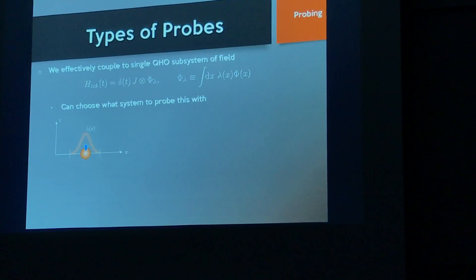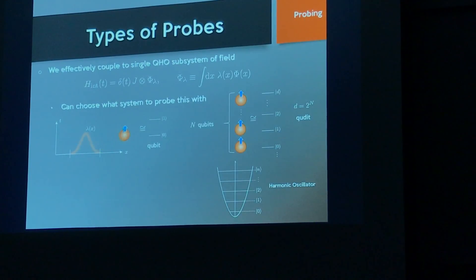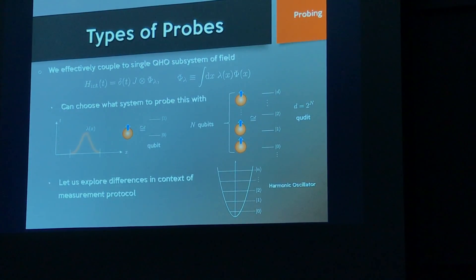We effectively couple to a single quantum harmonic oscillator subsystem of the field — a certain quadrature, which is a smeared-out field operator smeared with respect to a certain distribution, often of compact support. We can choose what to probe this subspace with: either a qubit, n qubits forming a qudit (like an exponentially large atom), or harmonic oscillators, which is the personal favorite in this thesis.